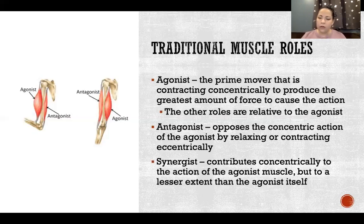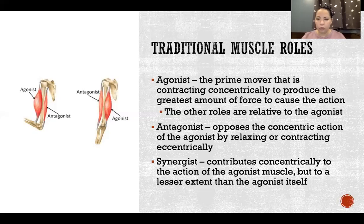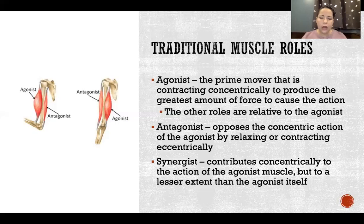The synergist is any muscle that contributes concentrically to the action of the agonist muscle, but to a lesser extent than the actual agonist. Any muscle that is also contracting concentrically to produce the movement would be considered a synergist. Going back to our example of elbow flexion with the forearm supinated, the synergists would be brachialis and brachioradialis.